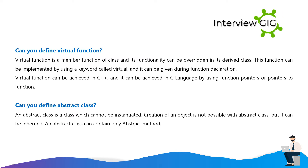Can you define virtual function? Virtual function is a member function of a class and its functionality can be overwritten in its derived class. This function can be implemented by using a keyword called virtual, given during function declaration. Virtual function can be achieved in C++ and it can also be achieved in C language by using function pointers or pointers to function. Can you define abstract class? An abstract class is a class which cannot be instantiated. Creation of an object is not possible with an abstract class but it can be inherited. An abstract class can contain only abstract methods.